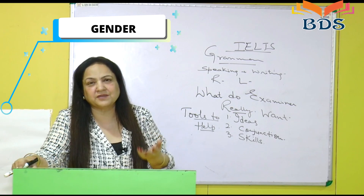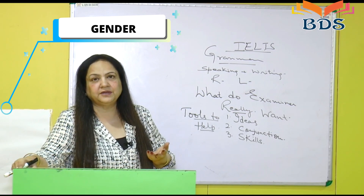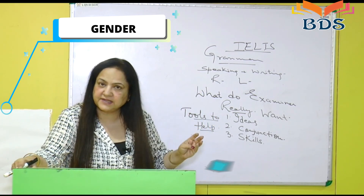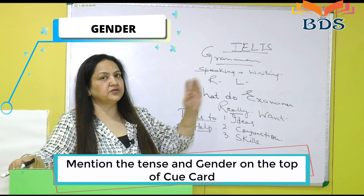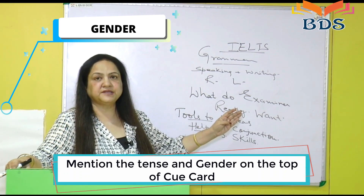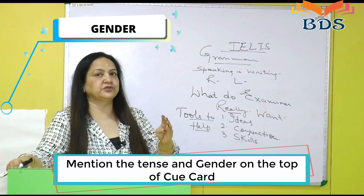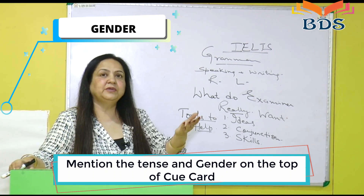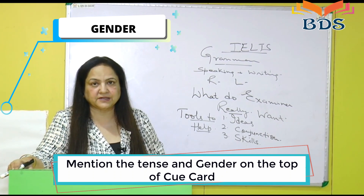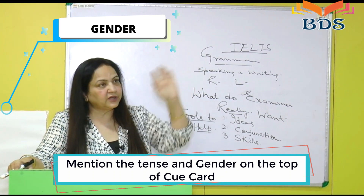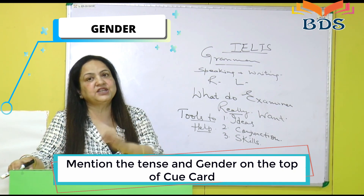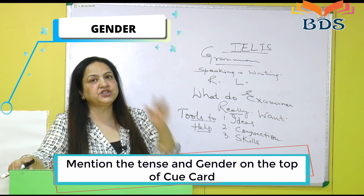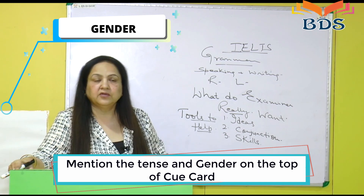Speaking mein do tarah se marking hoti hai. The card is going to check your past, present, or future tense. Whenever the card is in front of you, identify which tense it is and write it on top. Second is gender — whether it will go in 'he' or 'she' — write that also.